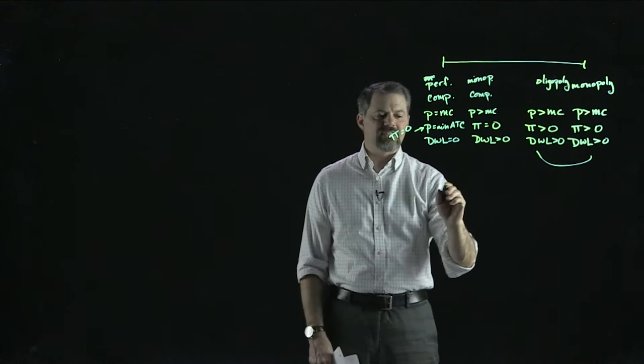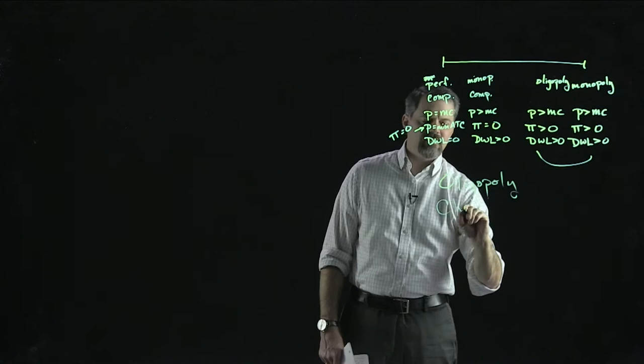You can see that oligopoly looks similar to monopoly in terms of outcomes for consumers and society. All these firms maximize profit by producing where marginal revenue equals marginal cost. It's just that with oligopoly we take a different approach to analyzing the market. So let's think about the characteristics of oligopoly.